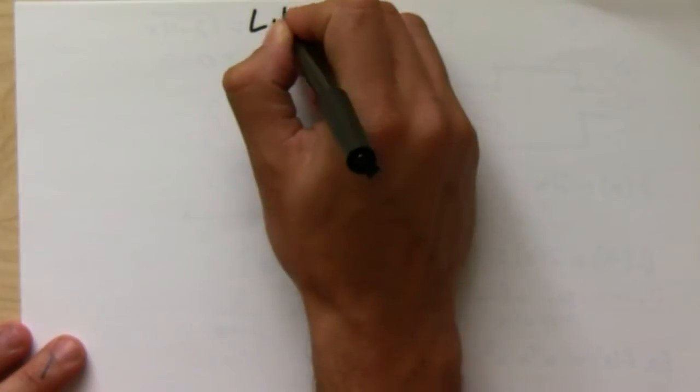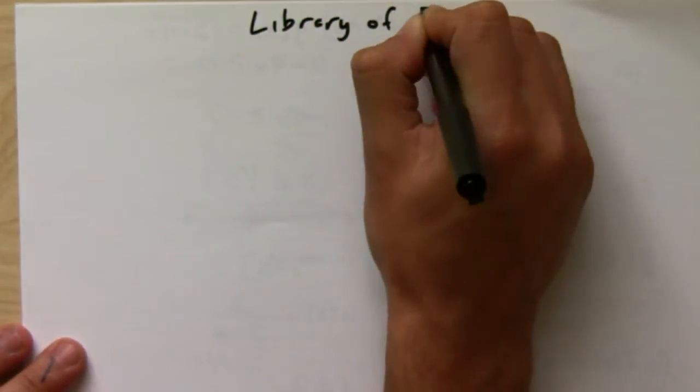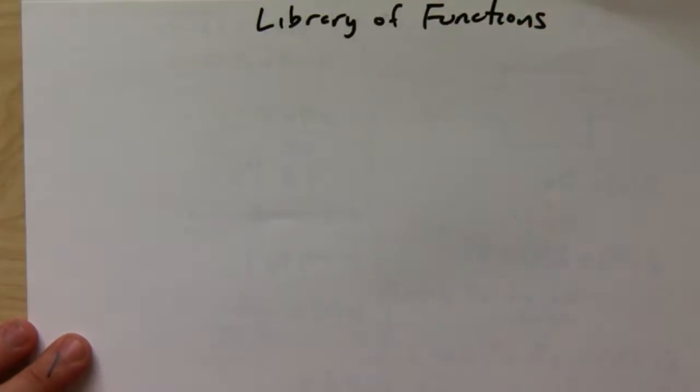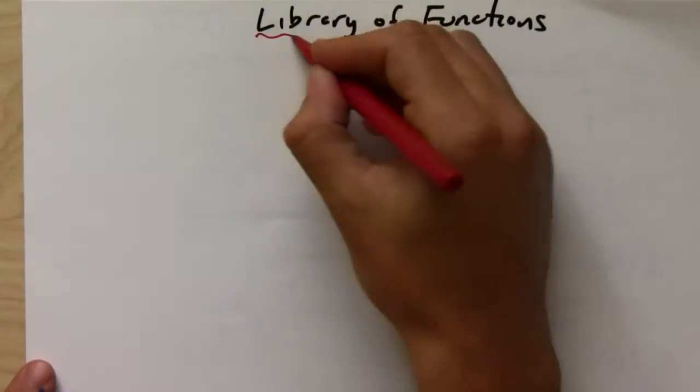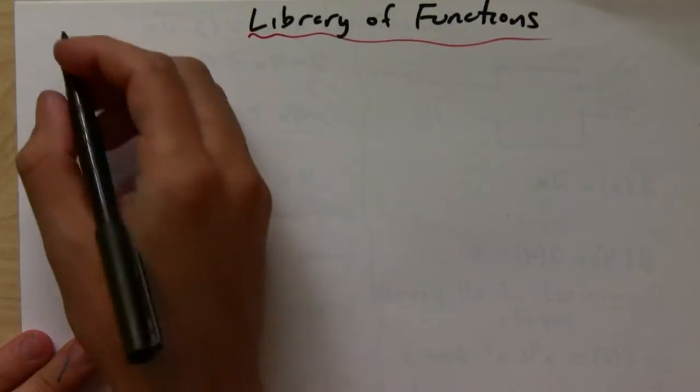Let's write down a little library of functions. This is going to be important. These are the functions that you should know — they should come immediately from your brain right away.